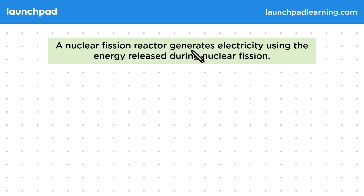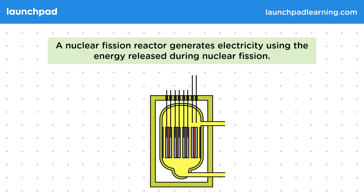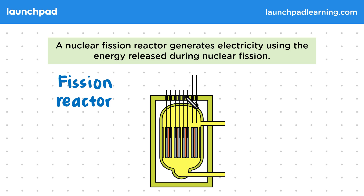A nuclear fission reactor generates electricity using the energy released during nuclear fission. Remember that nuclear fission is when a large nucleus absorbs a neutron and then breaks apart, releasing energy. The reactor is used to convert the nuclear energy stored in atoms to electrical energy in the national grid. Here's a simple design of what a nuclear fission reactor could look like, though you might also see this referred to as a nuclear reactor or a fission reactor. It's a specifically designed environment that facilitates nuclear fission reactions and harnesses the heat released by them.